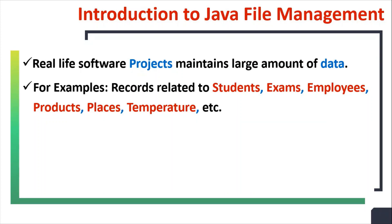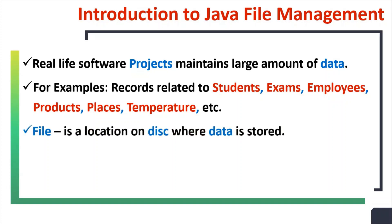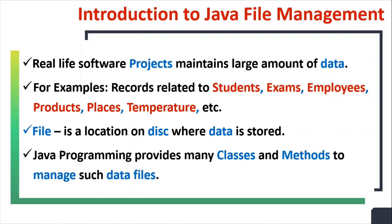Real-life software projects maintain large amounts of data — for example, records related to students, exams, employees, products, places, temperature, etc. A file is a location on disk where data is stored. For example, in a student management system or a school management system, we store student-related data into a student file, which is stored on the hard disk. Java programming provides many classes and methods to manage such data files.